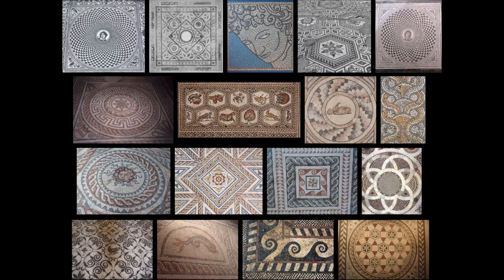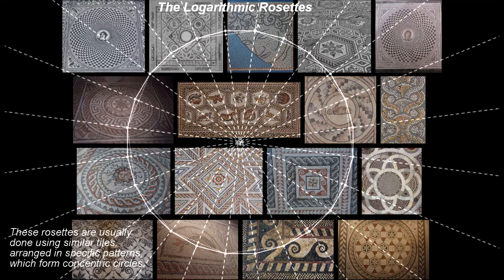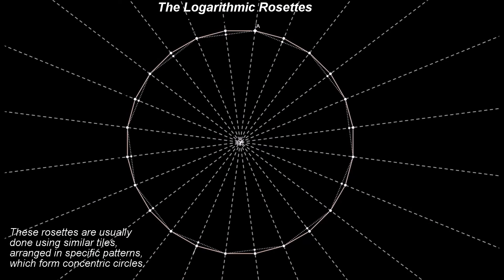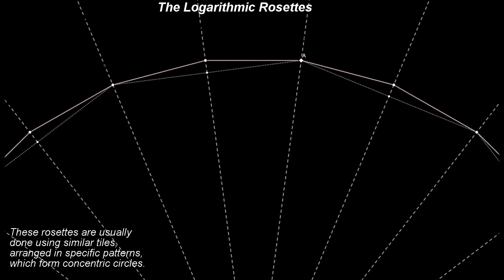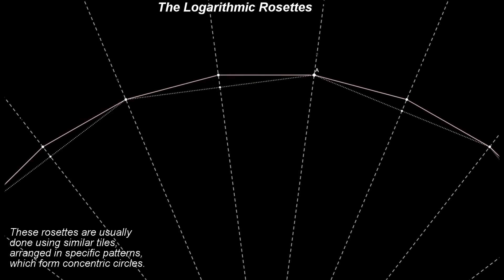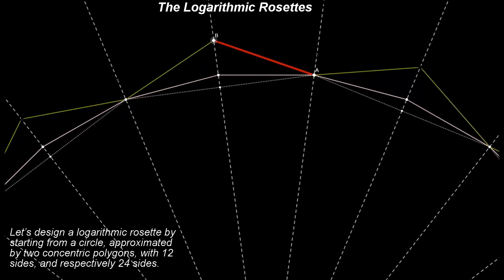In the ancient Greece and the Roman Empire, the rich people used to cover the floors of their houses with mosaic designs and images. These designs are known as rosettes. To understand better the logarithmic spirals, we will look next into the logarithmic rosettes. These rosettes were usually done using similar tiles arranged in specific patterns which form concentric circles.